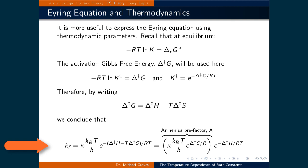So the Eyring equation can be rewritten as the rate constant K equal to kappa times the Boltzmann constant times T divided by Planck's constant, times e raised to the power of the activation entropy over R, times e raised to the power of the negative activation enthalpy over RT. This is an interesting result because we again have an Arrhenius relationship, where the prefactor A is now related to the thermal energy of the system and the activation entropy, and the activation energy is simply the difference in enthalpy between the reactants and the activated complex.